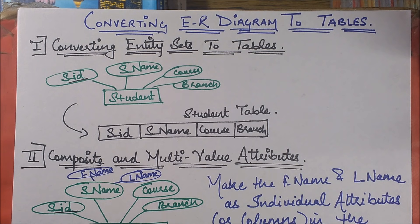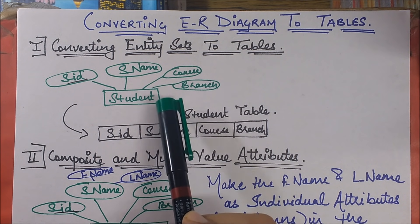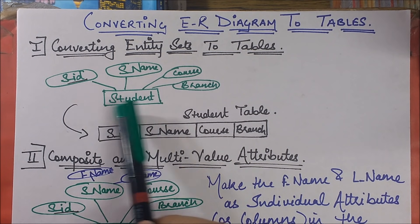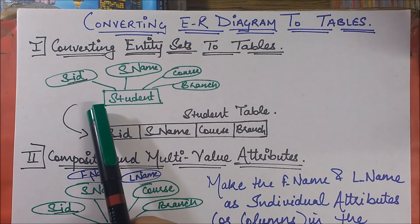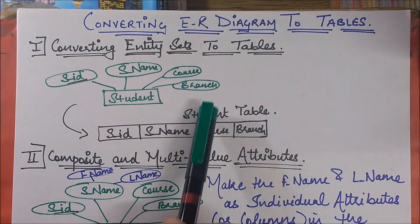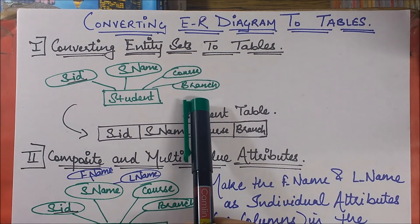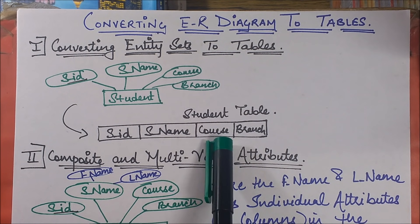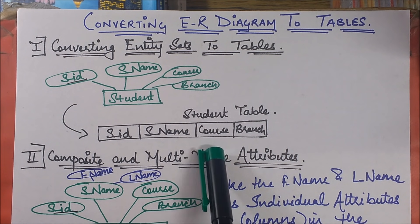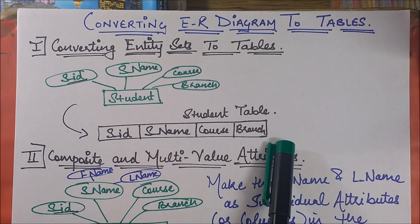Let's start with the first one. If I need to convert my entity set in the form of tables, I can have a strong entity set as well as a weak entity set. In case of a strong entity set like the student entity set shown here, it is represented with a single rectangular object. A double outlined rectangle would indicate a weak entity set. The student entity has four attributes: student ID, student name, course, and branch. You simply put all four attributes as columns of your relational table, named after the entity. So the new relational table becomes the student table with student ID, student name, course, and branch as columns.